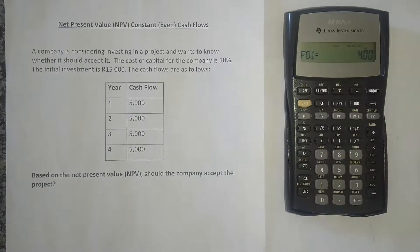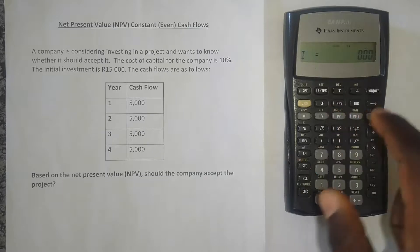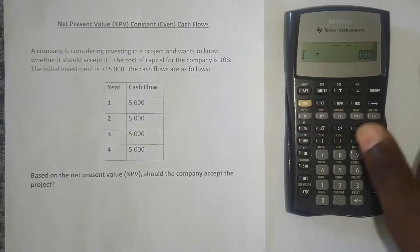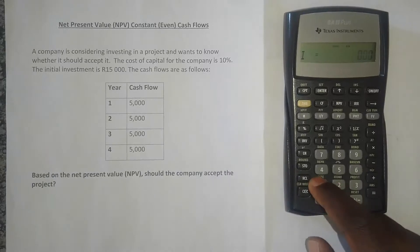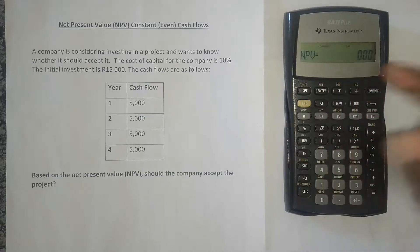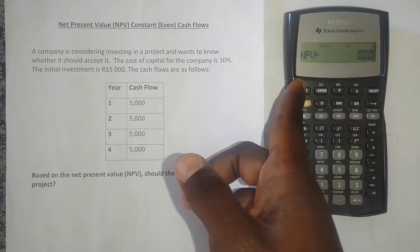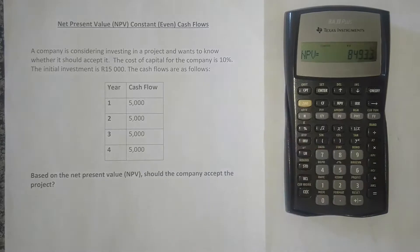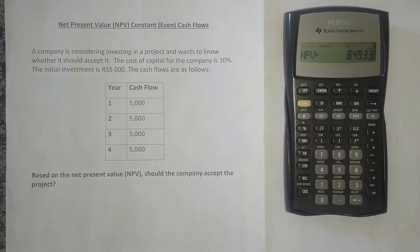Now all we need to do is put in the interest rate and compute the net present value. Press the NPV button — it's asking you what your interest rate is. The cost of capital is 10%, so press 10 and press enter. Then press the downward arrow, and press CPT, which stands for compute, and it will give you your net present value. Our answer is 849 rand and 33 cents, and it's positive. That means the company should accept the project because the net present value is positive.